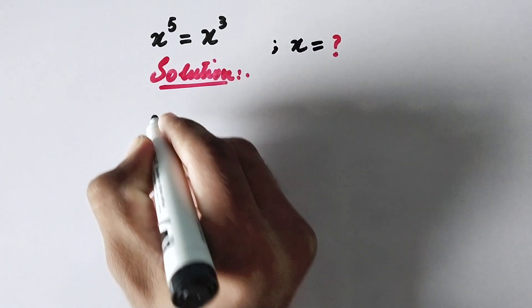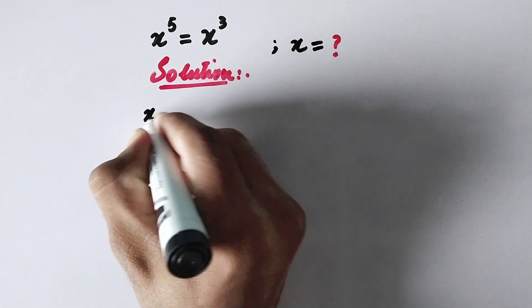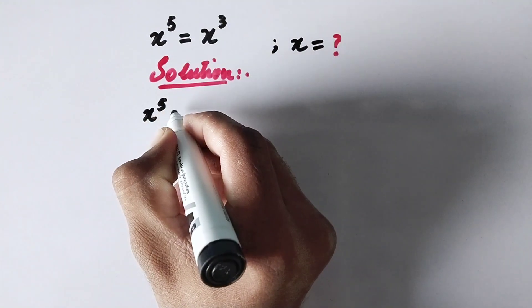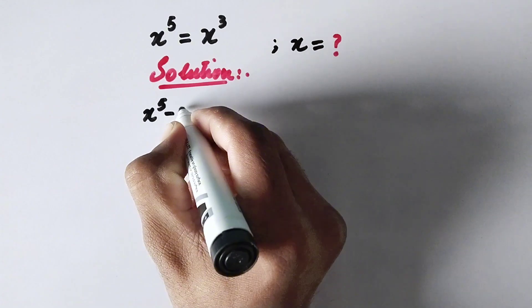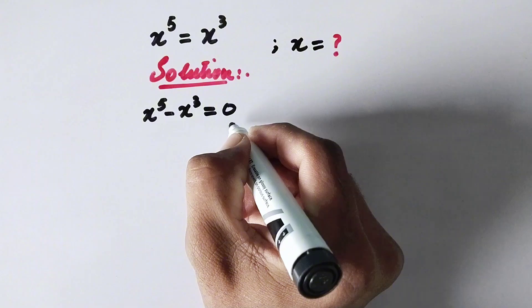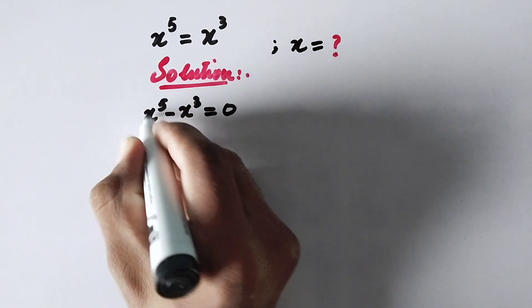In the first step we will write x to the power 5, and we will take this value on the left hand side. Then it will be negative x to the power 3 is equal to 0. Or we can expand this value in this form: x to the power 3 times x to the power 2 minus x to the power 3 is equal to 0.